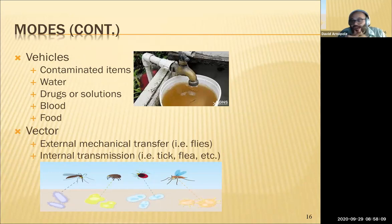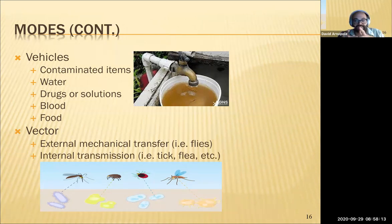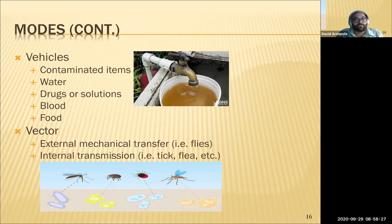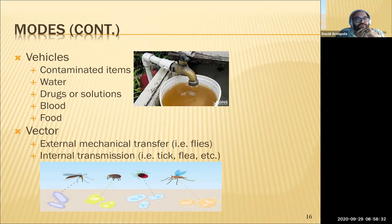Vehicles are contaminated items — water, drugs, blood, food — anything with bacterium on or in it can be a vehicle. Vectors involve external mechanical transfers, like a fly that gets microbes on it and lands on you or your food, versus internal transmission where something has to bite you. Surface transmission would be external, while bite or saliva-based transmission would be internal.